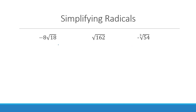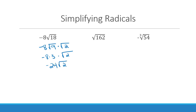One option is to look for a perfect square that goes into the number. For example, the square root of 18 can be rewritten as the square root of 9 times the square root of 2. The square root of 9 is 3, so with a coefficient of negative 8, this gives negative 8 times 3. You can't simplify the square root of 2 since 2 is not a perfect square, so this becomes negative 24 times the square root of 2. For larger numbers like 162, trying to find the largest perfect square may take a while.